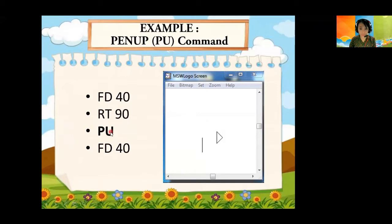PU, it means that the turtle will jump, okay, will jump. So you can see there is no line here. Next, FD 40, which means that the turtle will jump 40 steps.